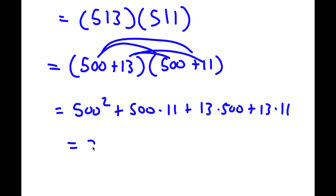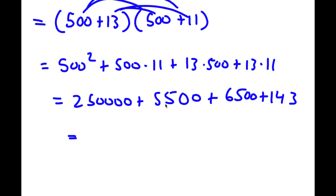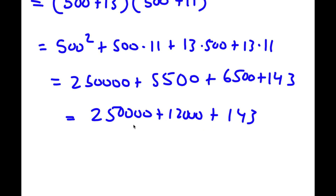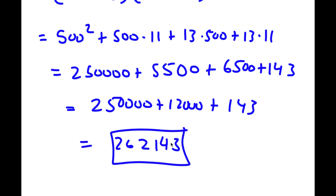500 squared is 250,000. 500 times 11 is 5,500. 13 times 500 is 6,500. And 13 times 11 is 143. So now 250,000 plus 5,500 plus 6,500 plus 143. Well, 5,500 plus 6,500 is 12,000. So I have 250,000 plus 12,000 plus 143. 250,000 plus 12,000 is 262,000, and 262,000 plus 143 is 262,143. So this is my answer.